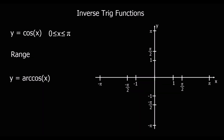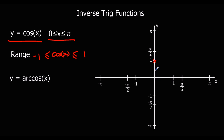Let's look at y equals cos x now. This time we're limiting the domain to between 0 and pi. So the range of the original function will still be between negative 1 and positive 1. We're going to draw this function, so it's going to go through 0, 1; pi over 2, 0; and pi, negative 1. If we draw the original function, it looks something like that.